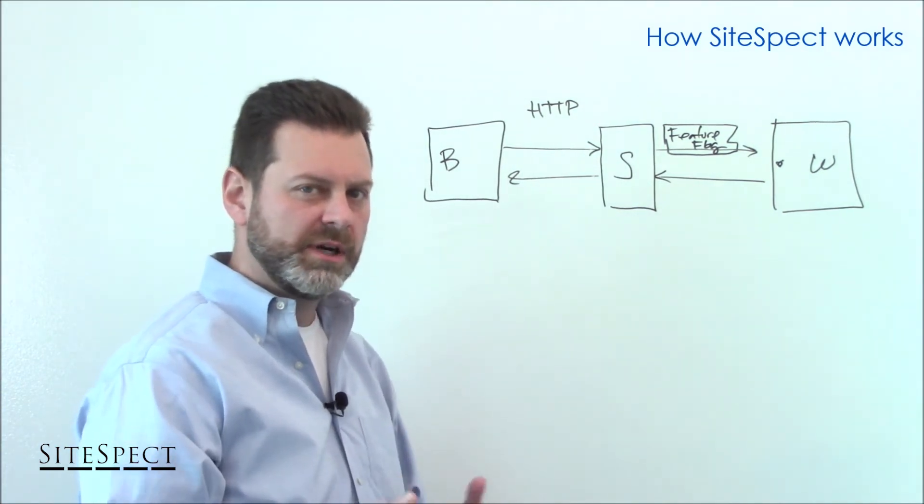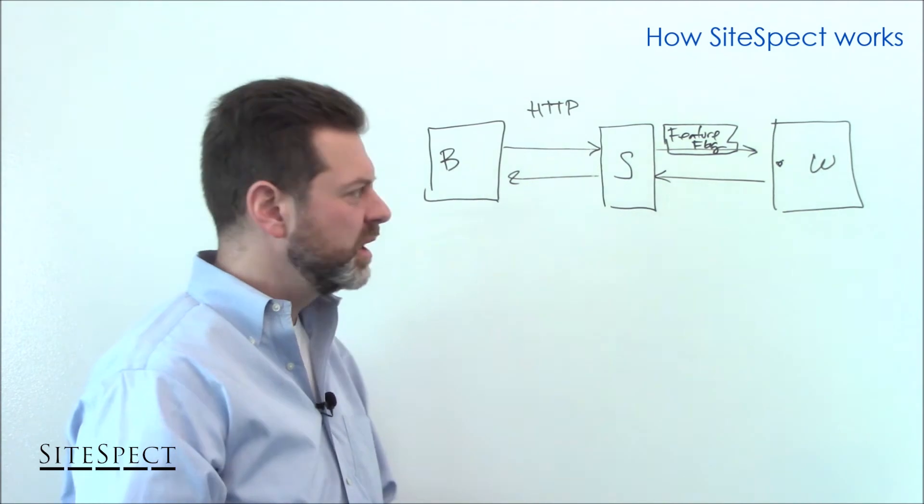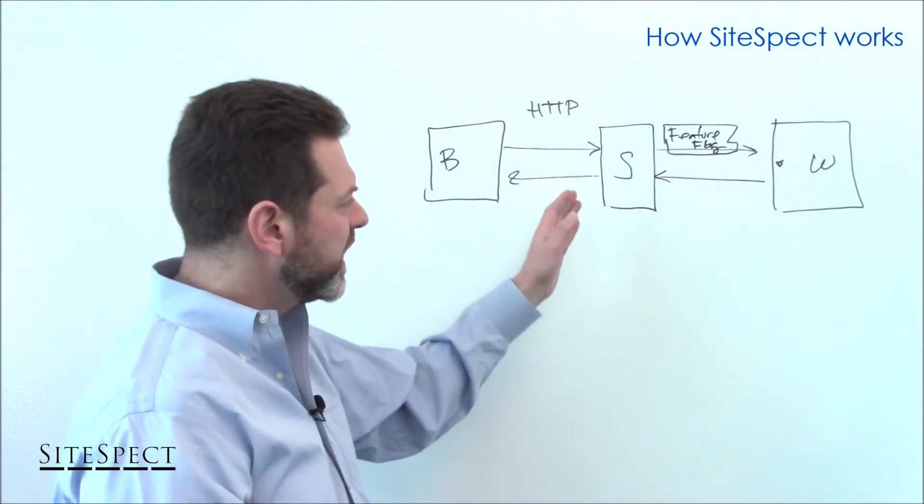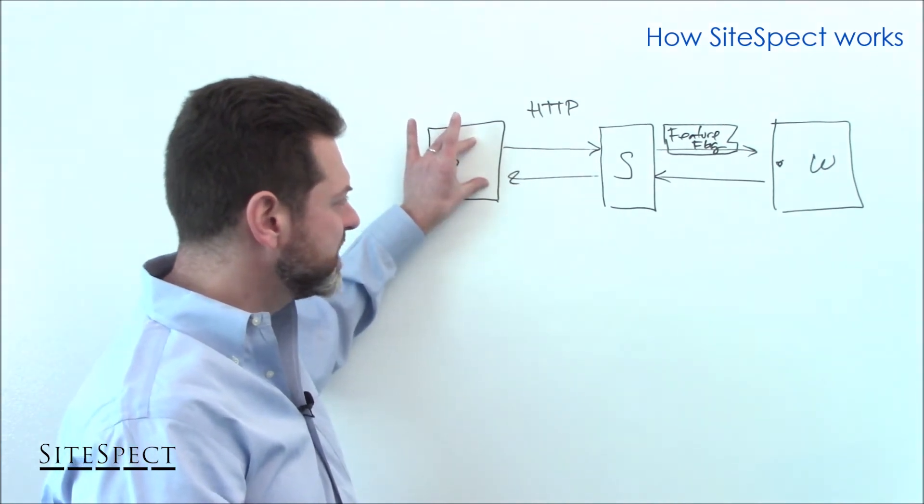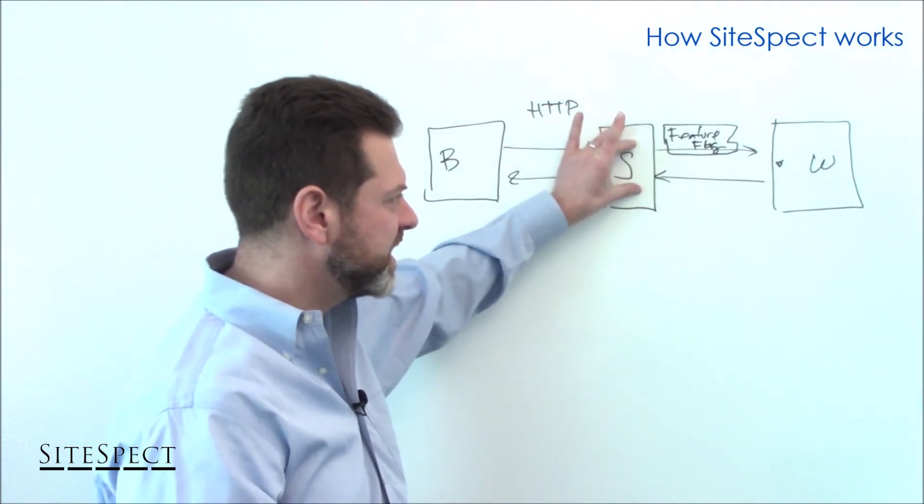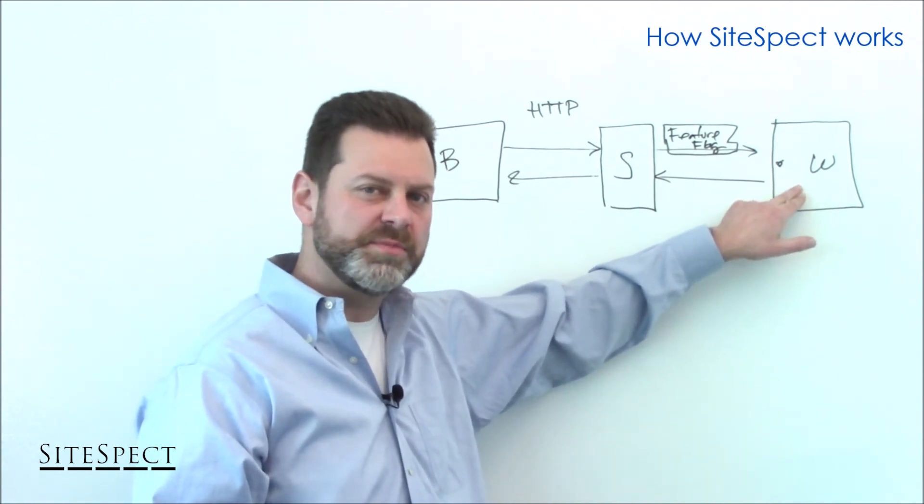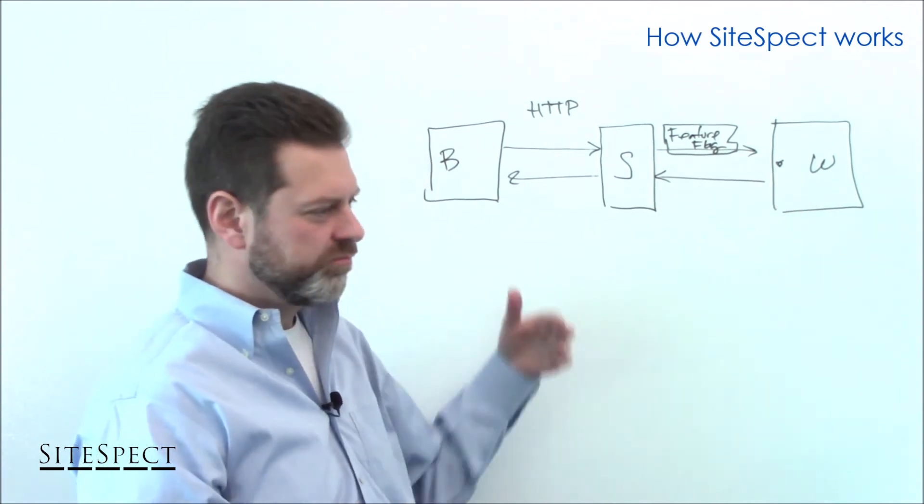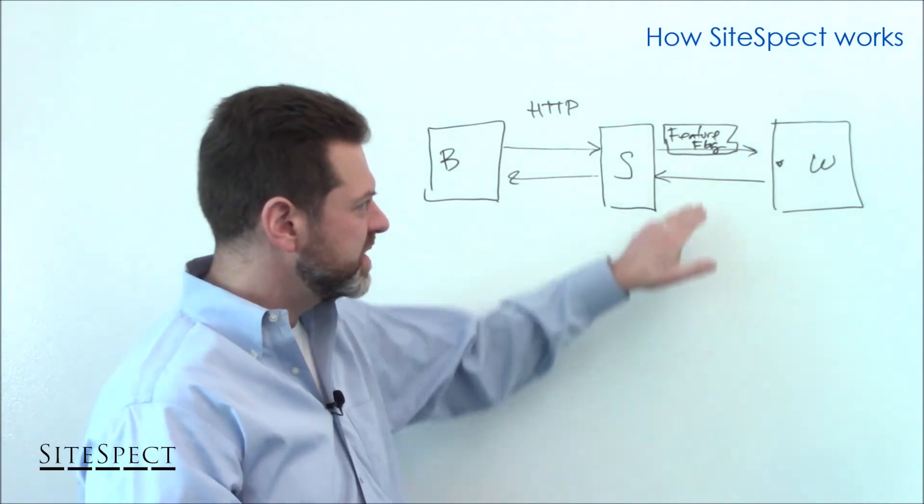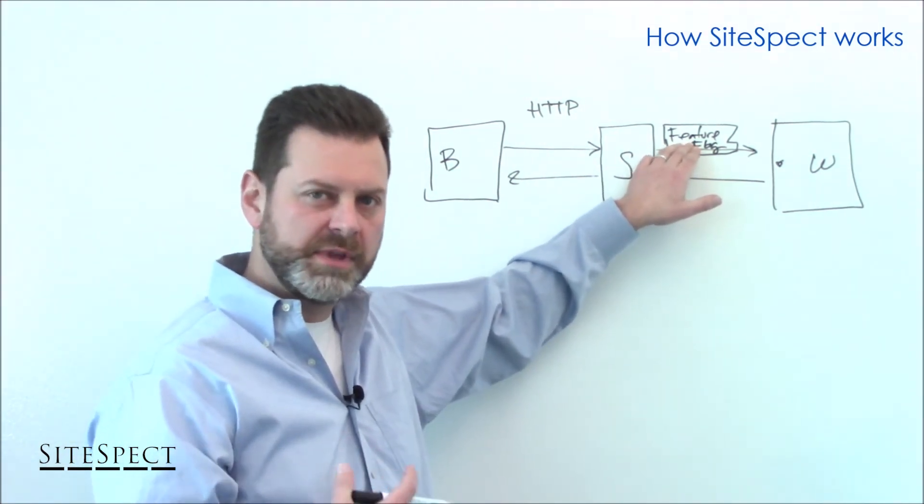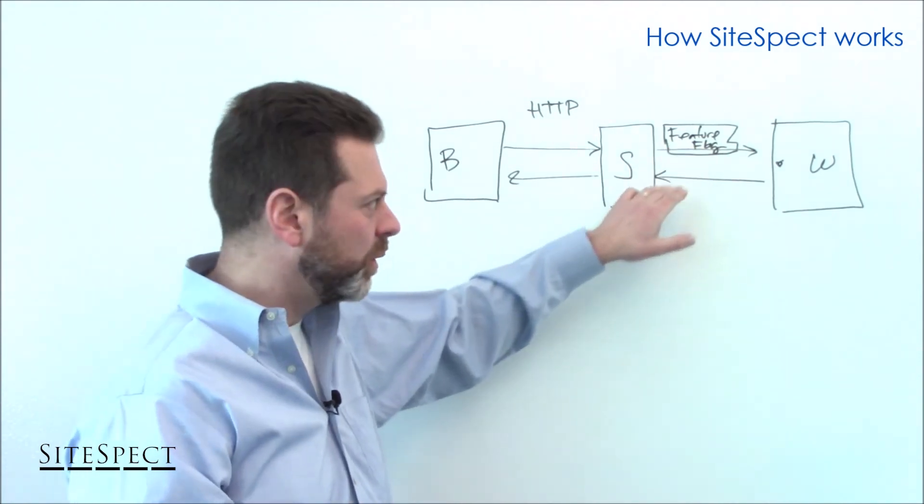And the feature flag can be either a cookie that SiteSpect essentially is simulating as a cookie header. It can be an arbitrary HTTP request header. It can even be something that gets appended to the URL. And of course, again, the browser doesn't see this. This is something that SiteSpect is introducing on the request flow. So when that request hits your web server, you could have code that simply says, you know, if feature flag equals green, then do this. If feature flag equals blue, then do that. One, zero, whatever value you want.